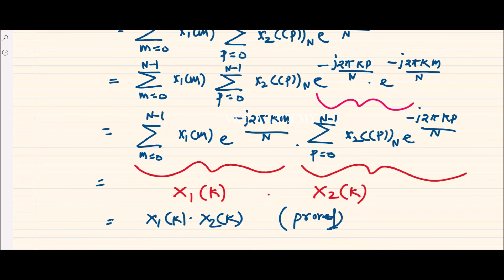In this way we have proved the circular convolution property of the discrete Fourier transform, showing that convolution of two discrete time sequences in the time domain is always equal to multiplication in the frequency domain. In the next class, we will use the same technique to prove the circular correlation property of the discrete Fourier transform.